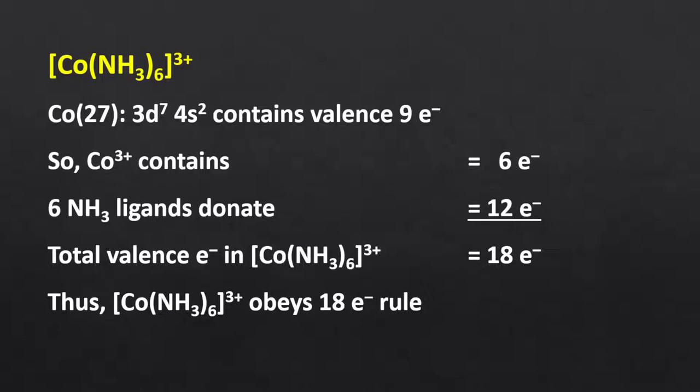Consider the example of hexaamminecobalt(III) ion. The atomic number of cobalt is 27, so the electronic configuration of its valence shell is 3d⁷4s². The oxidation state of cobalt in this complex is +3, thus there are 6 valence electrons. Each ammonia ligand donates 2 electrons, so overall 12 electrons from 6 ligands. Consequently, the total valence electron count is 18. That means the complex follows the 18 electron rule and is stable.